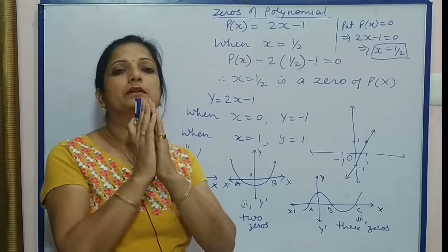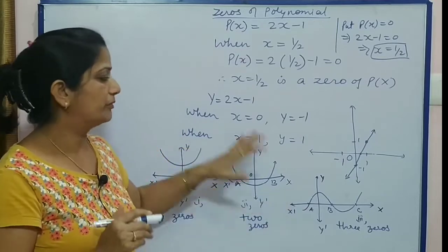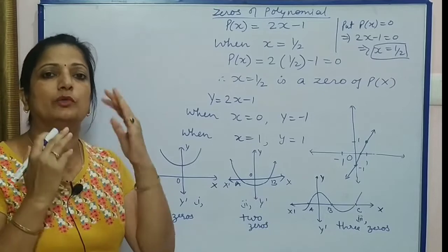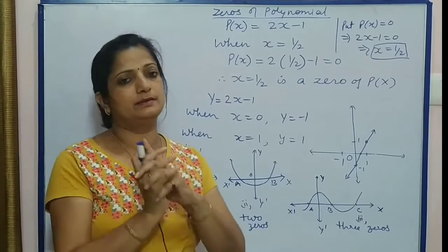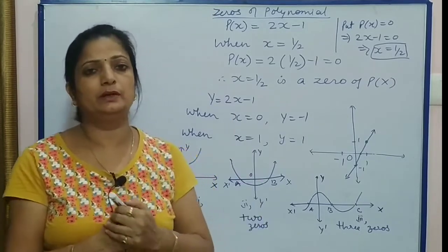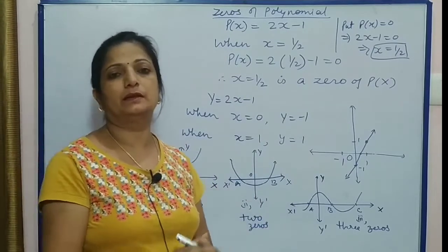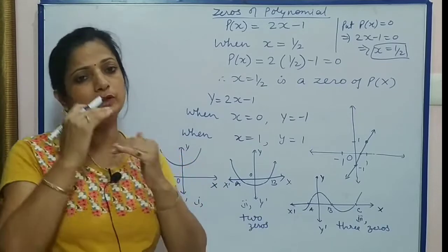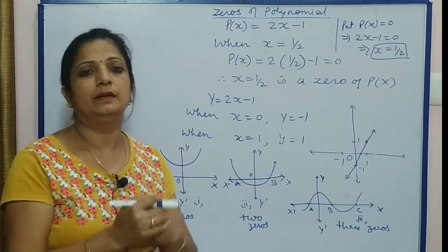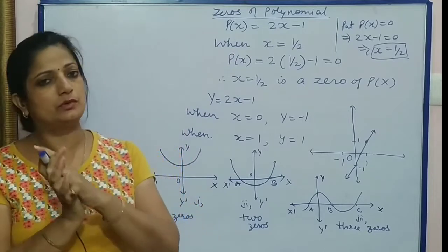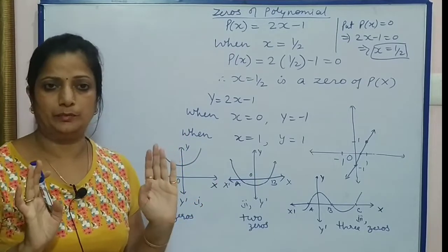That means particular graph of a given polynomial cuts x-axis at how many points - those are the zeros of that particular polynomial. Graph agar aapko given hai ki woh kitne points par cut karta hai particular x-axis ko, woh kehlayenge number of zeros of that particular polynomial.